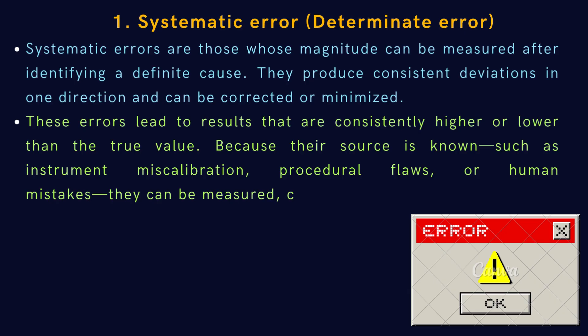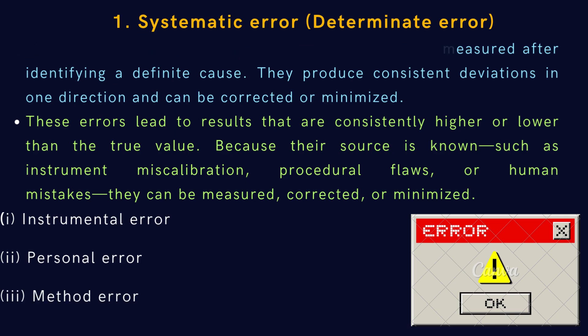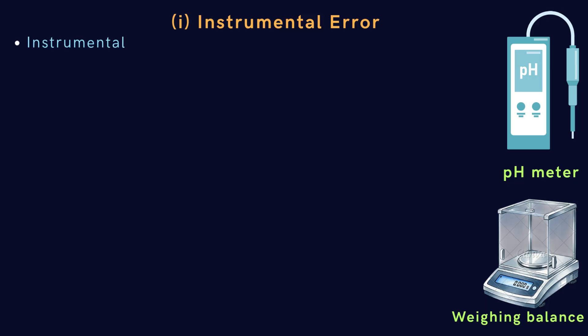Systematic errors are mainly classified into three types: first is instrumental errors, second is personal errors, and third is method errors. Let's discuss instrumental or apparatus error, which comes under systematic error.